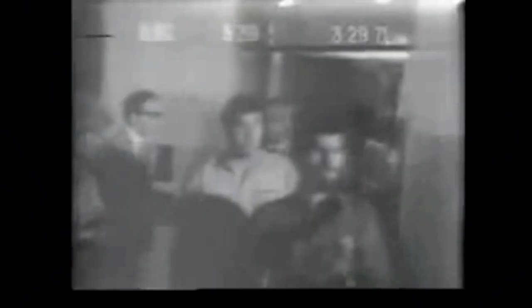West Pakistan was the base of the government and the military, and received over two-thirds of government spending. This was because West Pakistanis looked down upon Bengalis, considering them racially inferior and religiously impure.